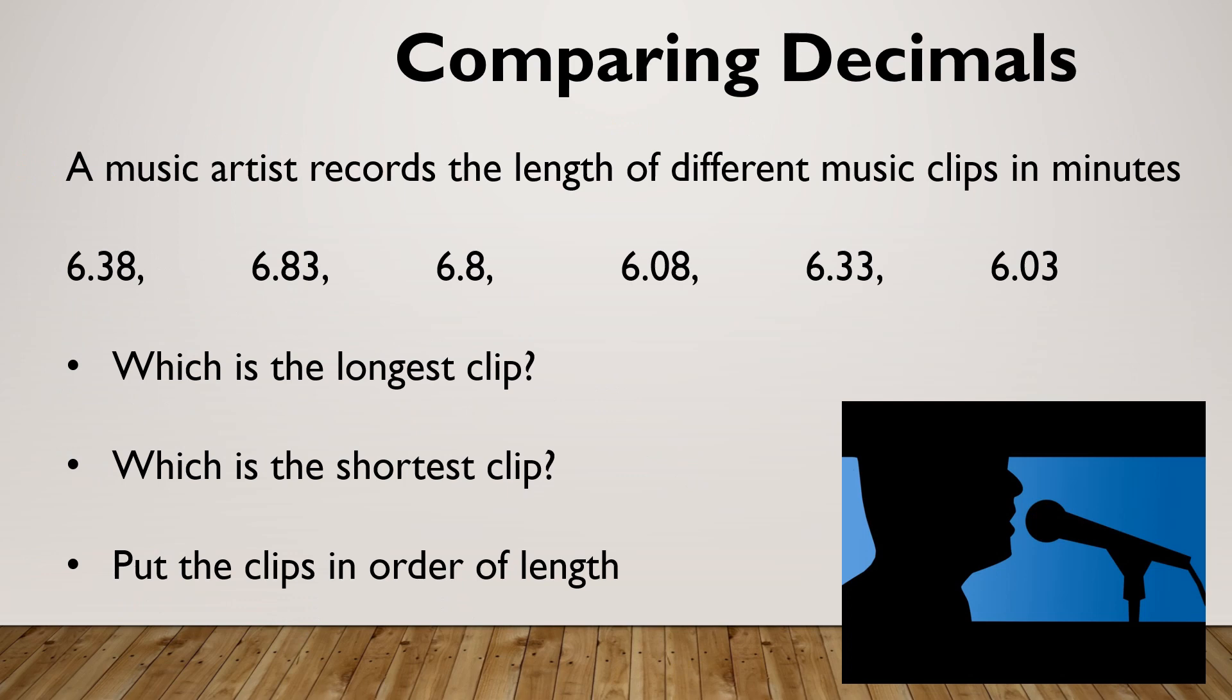One of the things we would be asked to do is to compare decimals. So I've got an example of a music artist records the length of different music clips. And I would like to know the longest clip, the shortest clip, and I would like these clips in order of length. The most common misconception is straight away saying this one must be the smallest because it is physically the smallest. That is not the case.